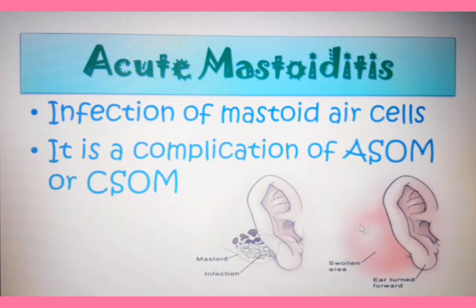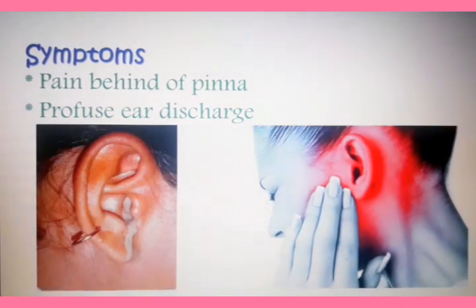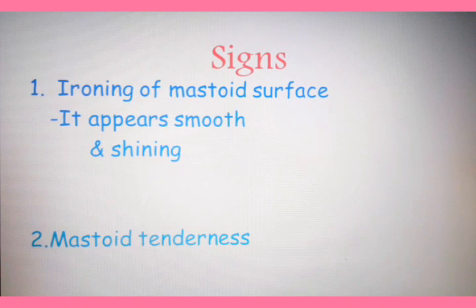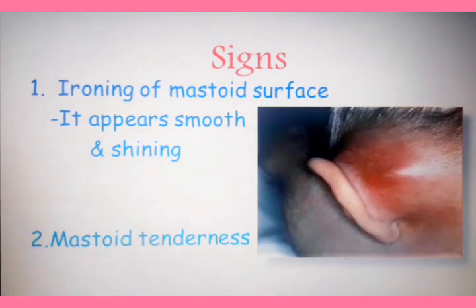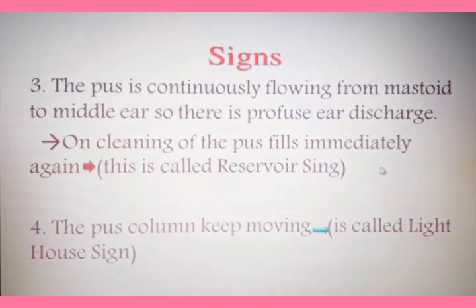Due to the infection, the superficial area becomes swollen and the ear is turned forward. The symptoms of acute mastoiditis include pain behind the pinna, profuse ear discharge, and signs of ironing of the mastoid surface — it appears smooth and shining. In this picture you can see clearly that it is very smooth and shining.